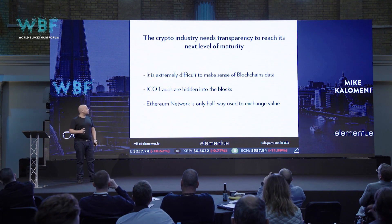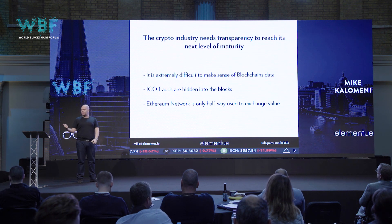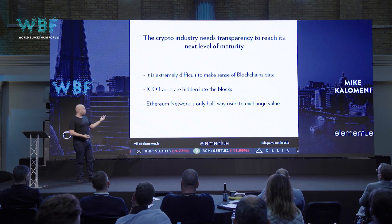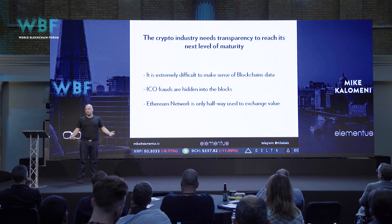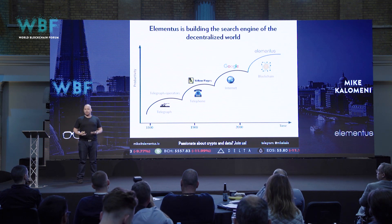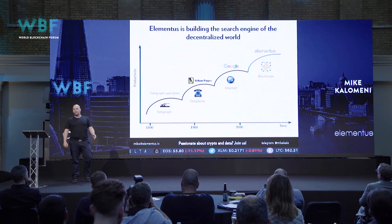To conclude, we have three points. First, it's extremely difficult to make sense of blockchain data and we're trying to solve that. Second, there is ICO fraud. Third, the Ethereum network is only halfway used to exchange value. Long-term, whenever there's a new way to exchange information, you need a new way to index it — like Google for the internet. We believe the blockchain world needs a search engine for blockchain, which is Elementus. If you're passionate about crypto and data and want to work with us or use our data, write me an email or reach out on Telegram. Thank you very much.